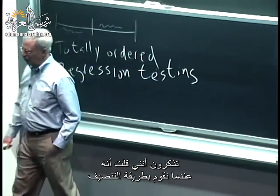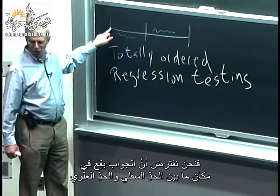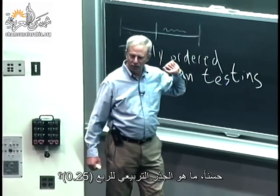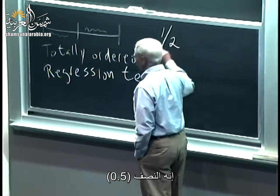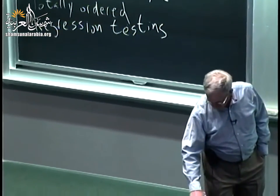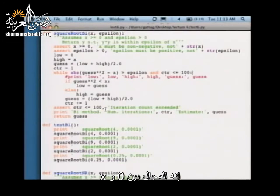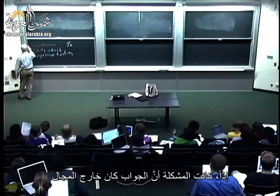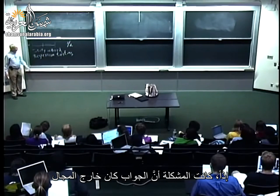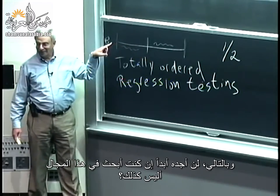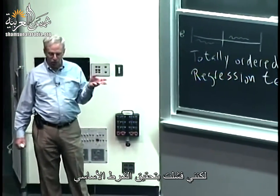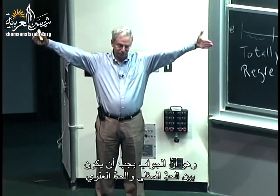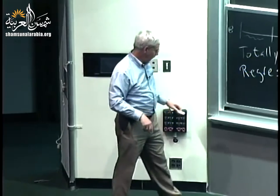Remember, when we do a bisection method, we're assuming the answer lies somewhere between the lower bound and the upper bound. What is the square root of a quarter? It is a half. Where did I tell my program to look for an answer? Between 0 and x. So the problem was, the answer was outside that region, and so I'm never going to find it cleverly searching in the wrong region. I failed to satisfy the initial condition that the answer had to be between the lower bound and the upper bound.